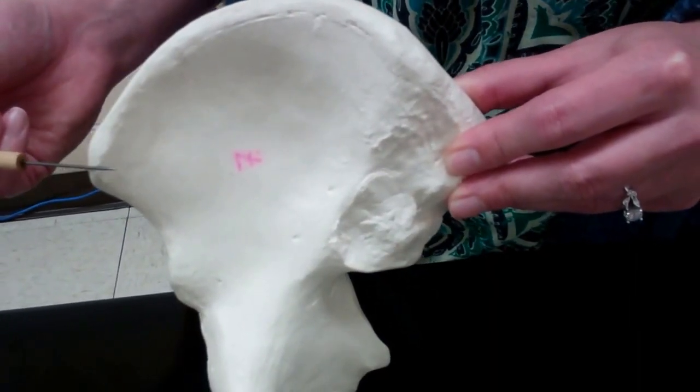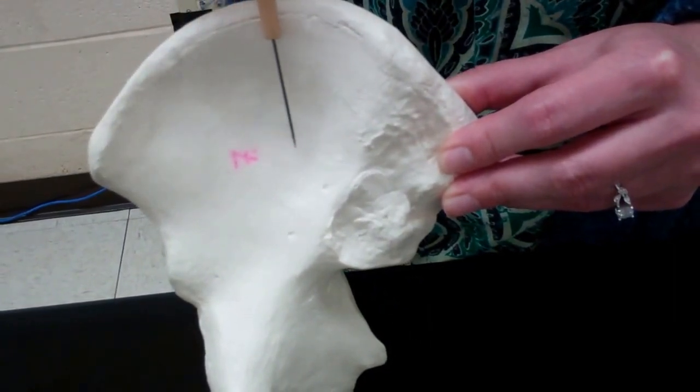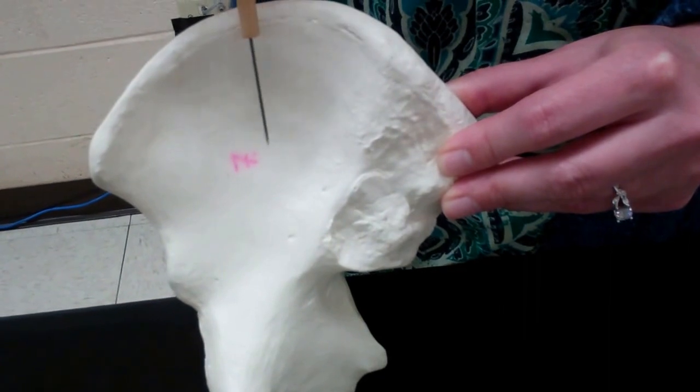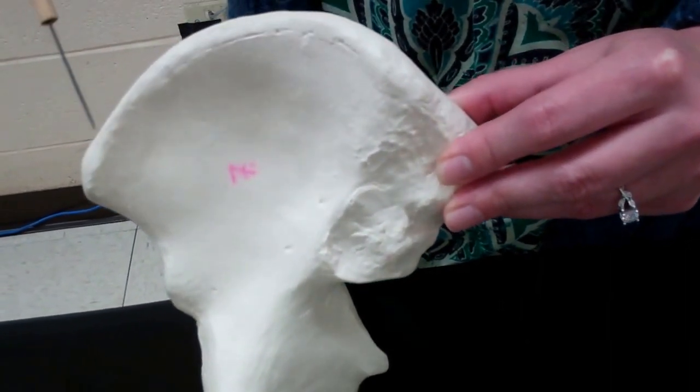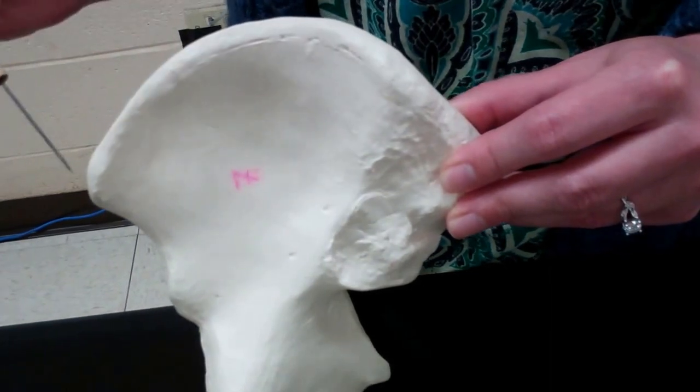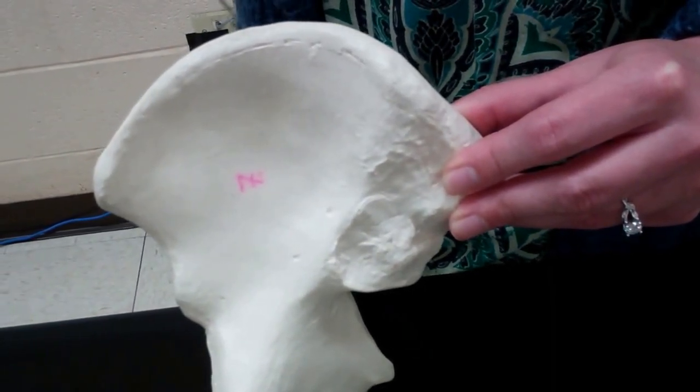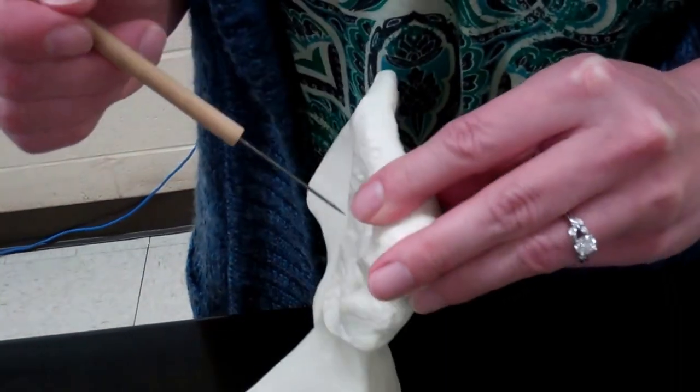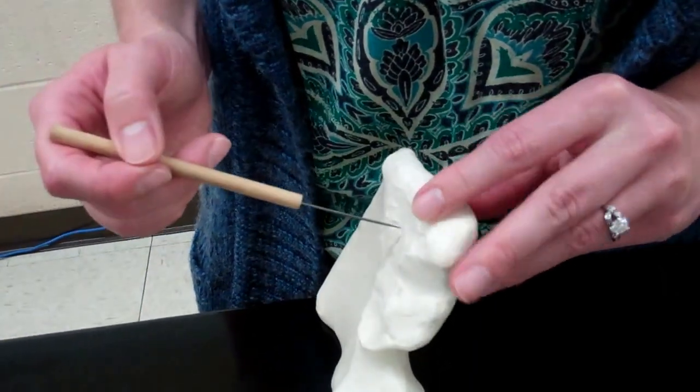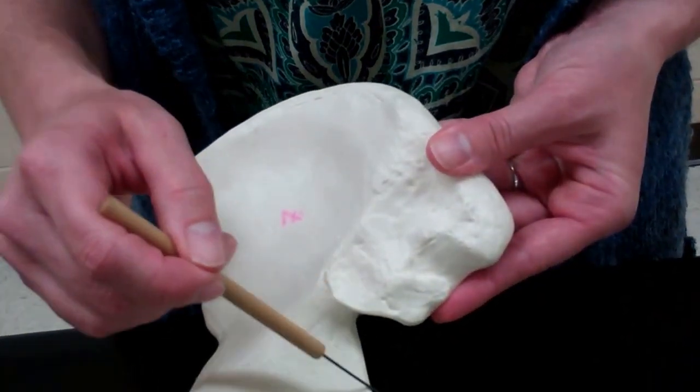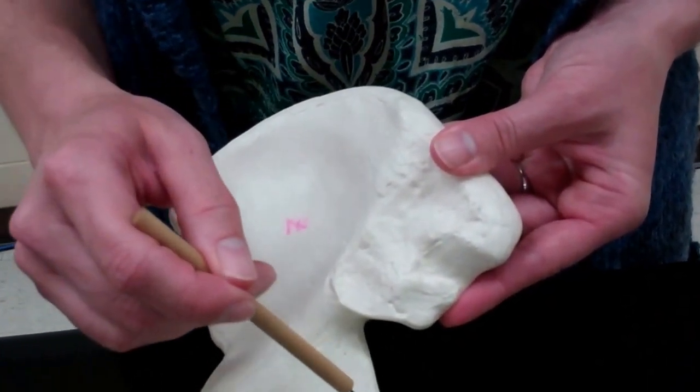As we follow the spine up and around, we hit the iliac fossa and the iliac crest. The iliac fossa is going to be the flatter cupped area. And then the crest will go along the top of the ilium and go towards the posterior side, where that bumpy section is. We'll follow it down to that big notch, which we call the greater sciatic notch.